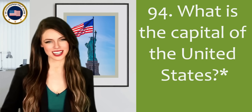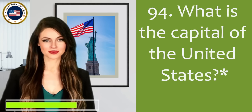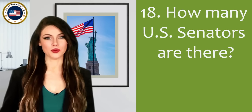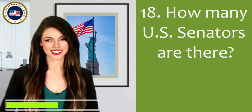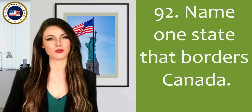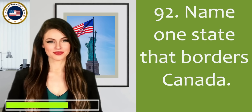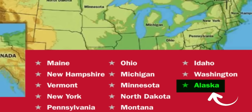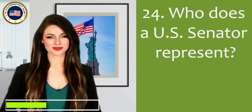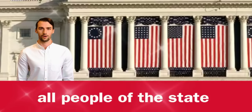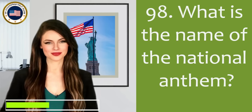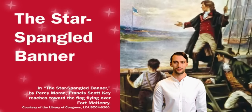What is the capital of the United States? Washington, D.C. How many U.S. Senators are there? One hundred. Name one state that borders Canada. Alaska. Who does a U.S. Senator represent? All people of the state. What is the name of the national anthem? The Star Spangled Banner.